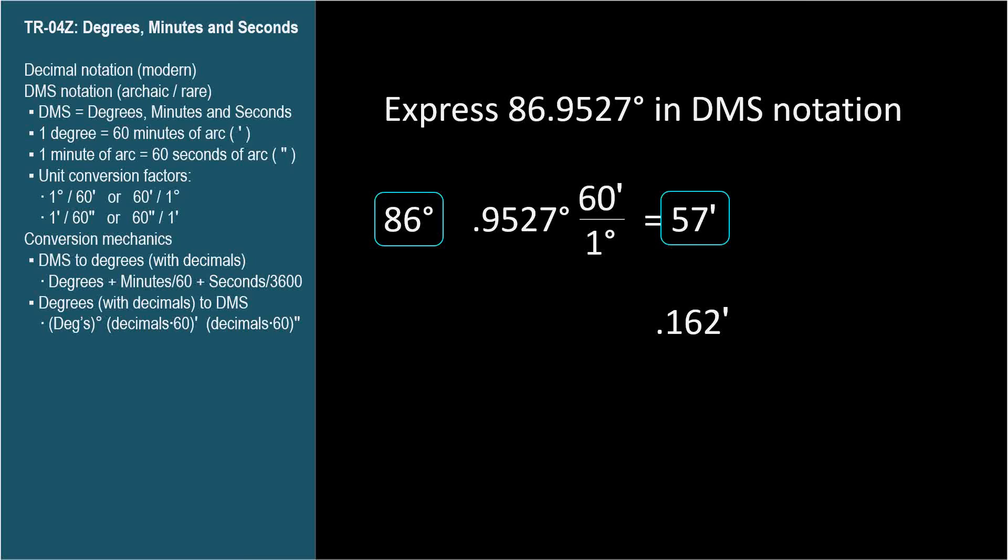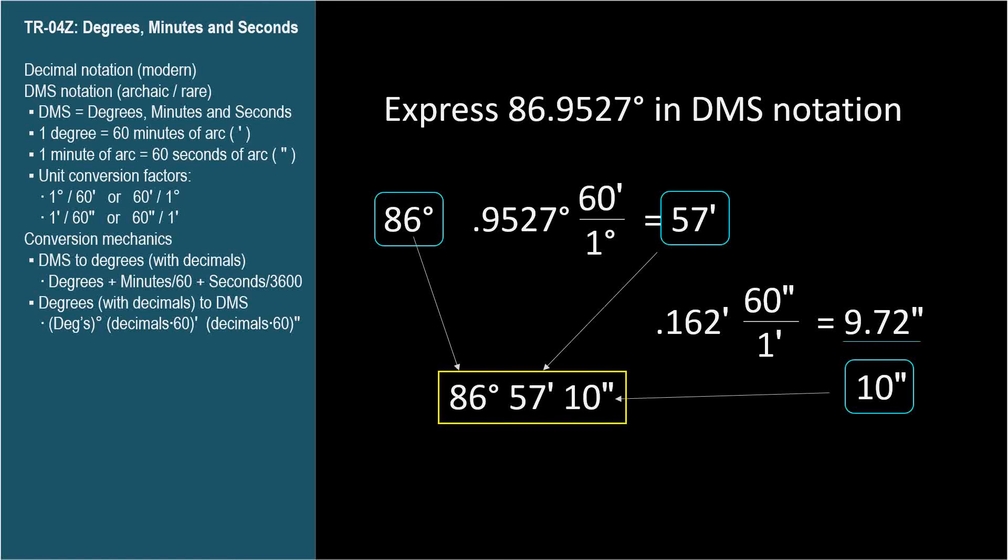And take the fractional part of minutes, .162, and multiply by 60 to get 9.72 for our seconds. If you get decimal seconds, you can just round to the nearest whole number, or carry one decimal place. If your instructor covers this topic in class, you can check with them to see what their preference is. I'll just round to 10, so our answer is 86 degrees, 57 minutes, and 10 seconds.